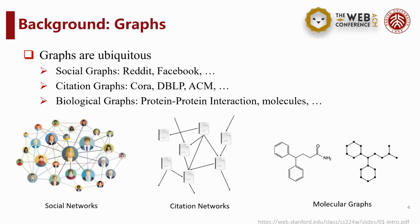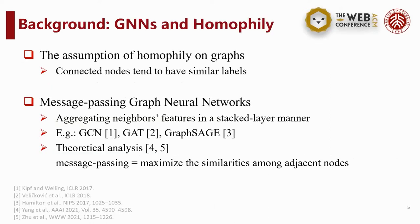As we know, graph structure data is ubiquitous in the real world, such as social networks, citation networks, and molecular graphs. Various types of graphs are considered to share a common property, homophily, which means connected nodes tend to have similar labels. Most of the existing works are designed on the basis of this inductive bias and make use of the similarities between nearby nodes. Message-passing graph neural networks are popular representatives, which aggregate neighbors' features in a stacked layer manner. Some theoretical works have shown the equivalence between the message-passing mechanism and an optimization objective to maximize the similarities among adjacent nodes.